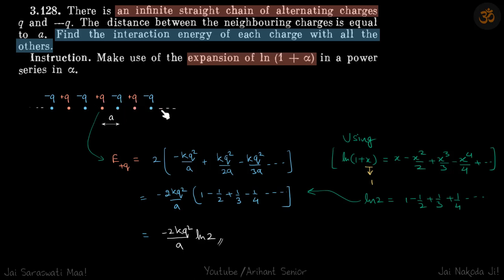We have alternate positive and negative charges till infinity and the distance between two consecutive charges is A. We need to find the interaction energy of each charge with all the others.